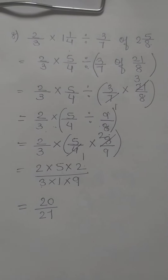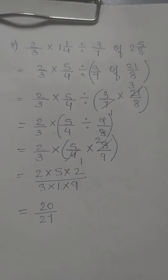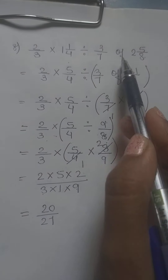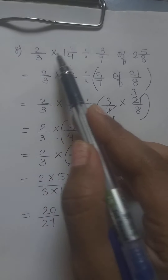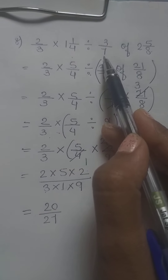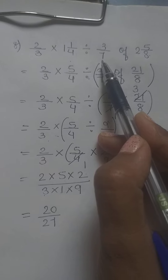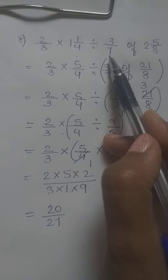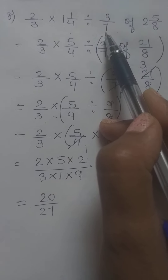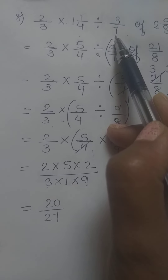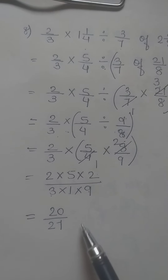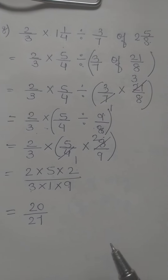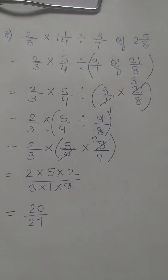In this type of question, you have to solve 'of' first, then division, and then multiplication. Whenever there is a division, convert it into a multiplicative inverse by reciprocating the number.